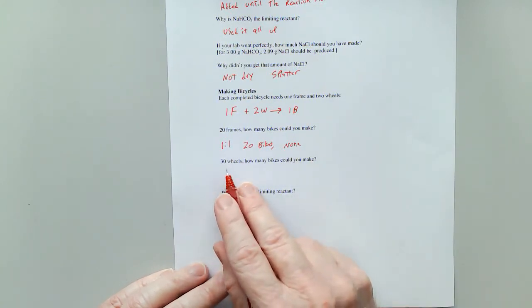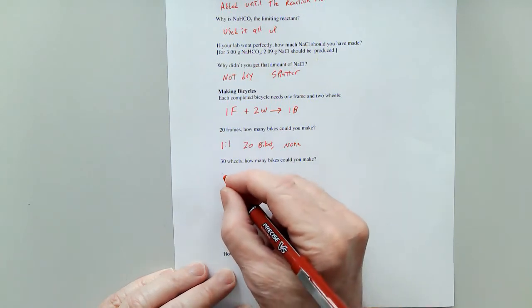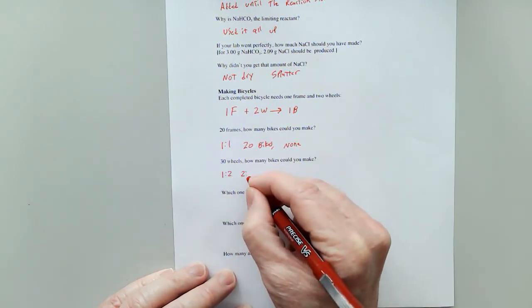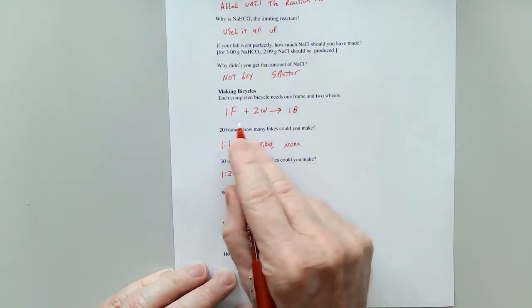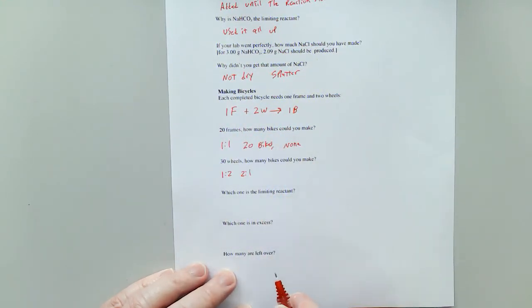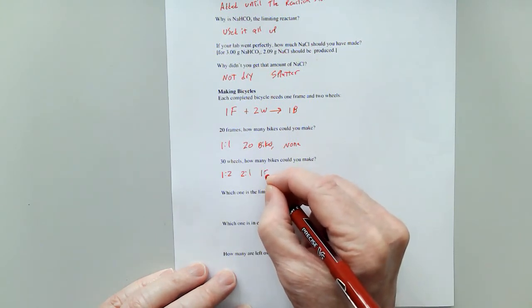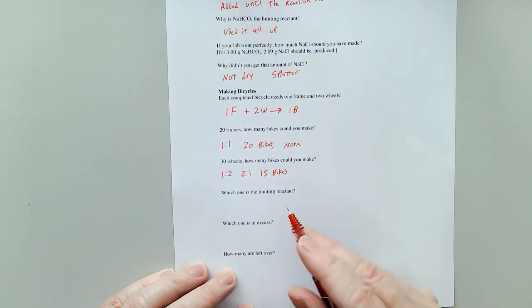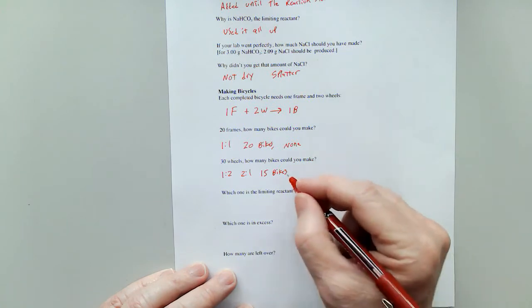Now, what if I have 30 wheels? Well, that's a one to two or two-to-one, depending upon which way you're looking at it in the equation. Ratio. I could make 15 bikes if I had 30 wheels, as long as I had enough frames.